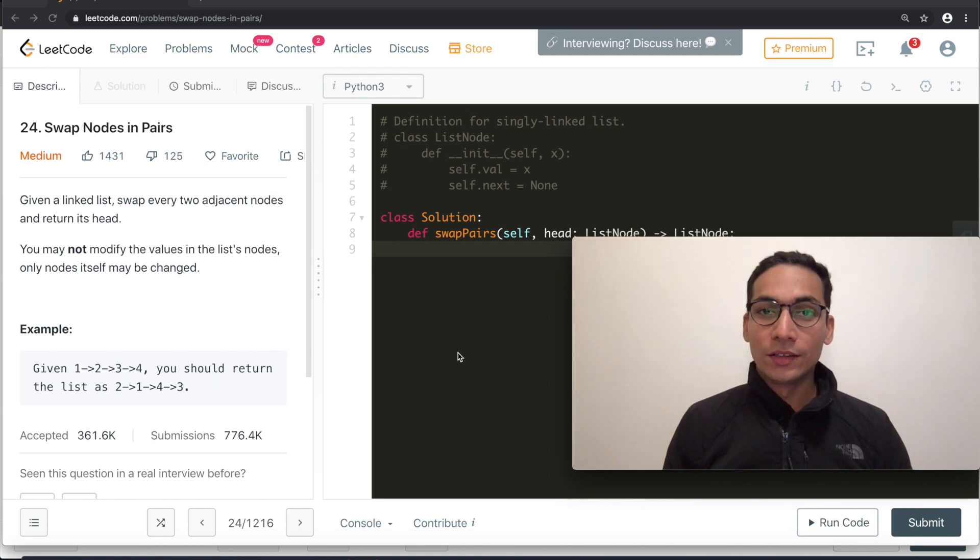Hi guys, welcome back to the channel. Today we are back with another very famous question. Today's question is swap nodes in pairs. Given a linked list, swap every two adjacent nodes and return its head. You may not modify